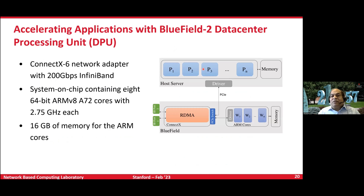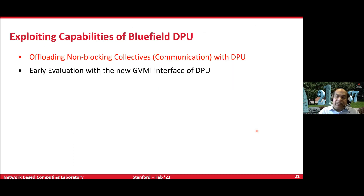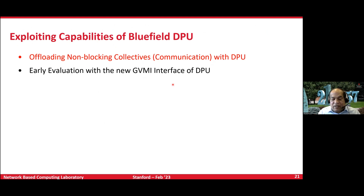Now let's go to the DPU — the new technology in town. Not only does InfiniBand have the RDMA logic, but it also has several ARM cores. I consider it like executives and assistants: the main processors are executives and these DPU cores are the assistants. Just like in normal offices we take help from assistants to accelerate day-to-day tasks, can we do that in HPC? I'll show two things here: non-blocking collectives with DPU, and a very fresh demo using the new GVMI interface.